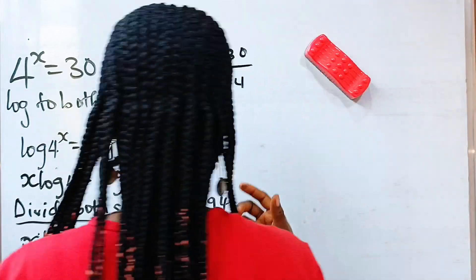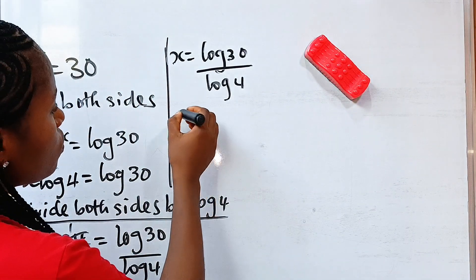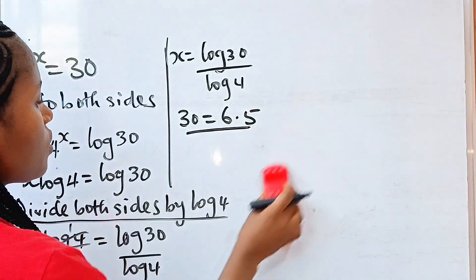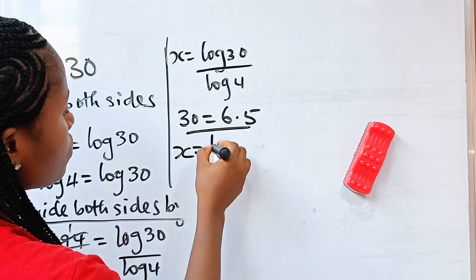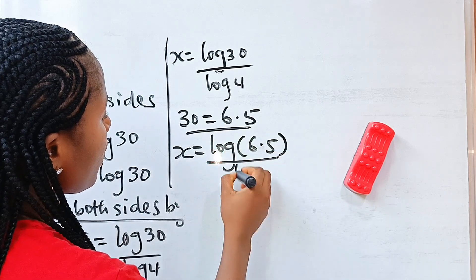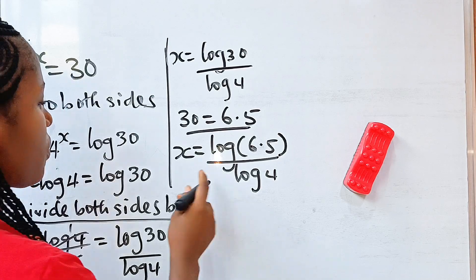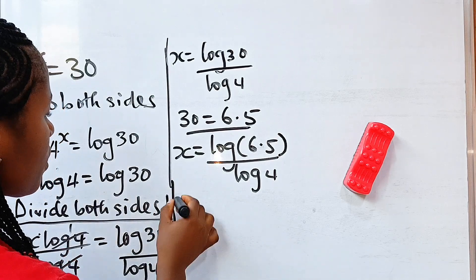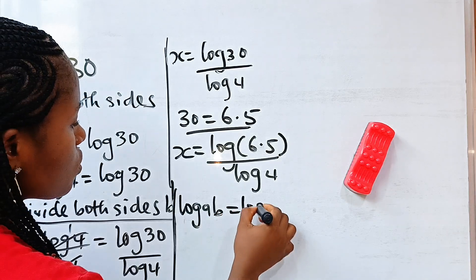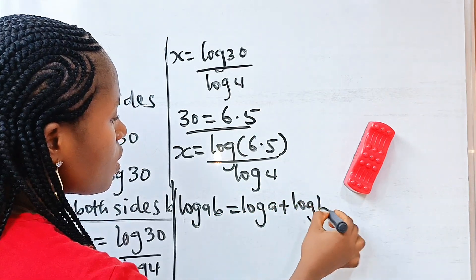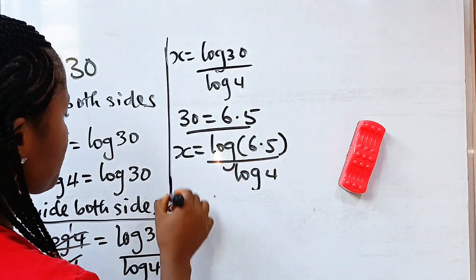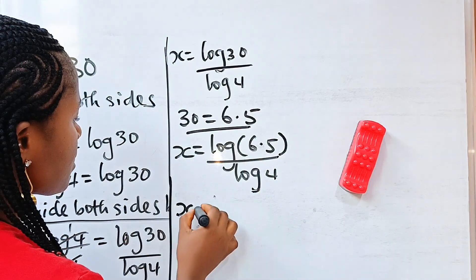Now, 30 is equal to 6 multiplied by 5, so we can write x as equal to log(6 × 5) divided by log 4. When you have log of a multiplied by b, this is equal to log a plus log b.